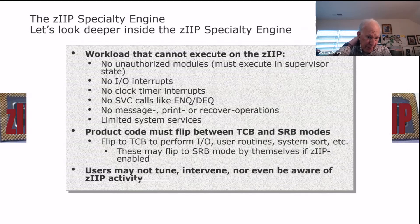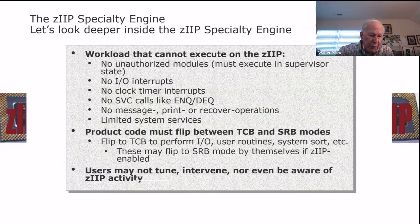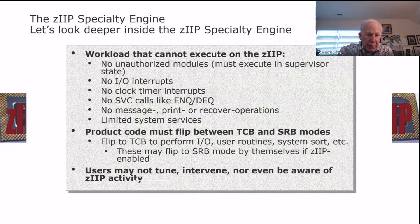As a result, any product that's going to work with the ZIP has to be able to flip back and forth between the ZIP and the CP — between TCV mode on the central processor and the SRV mode required for the ZIP. You do this in order to flip back from the ZIP to do IO, to pick up user routines, and to do system sorts.